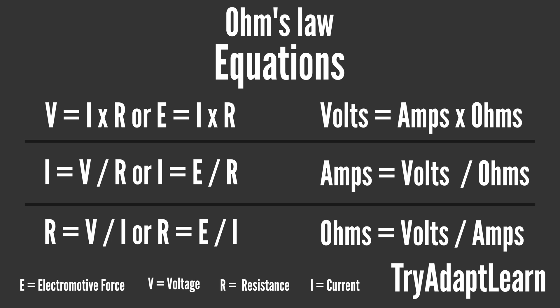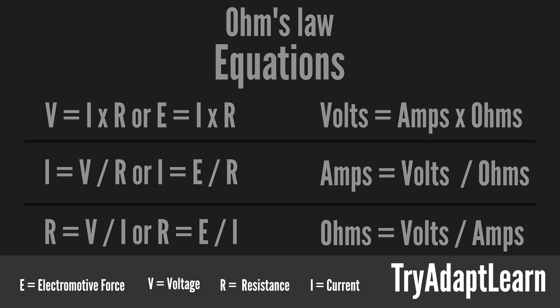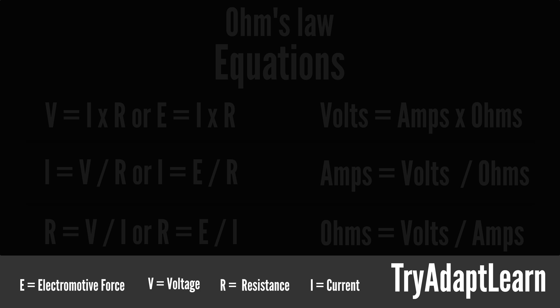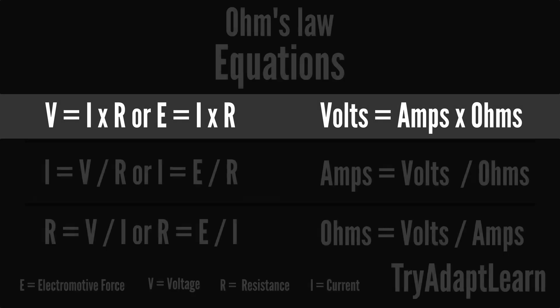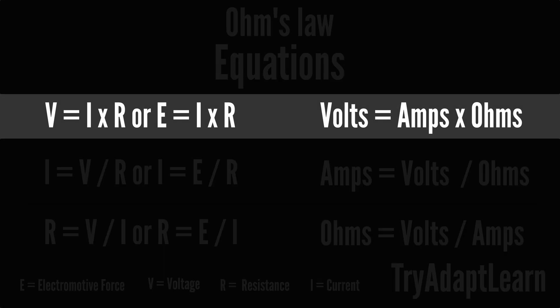There are a few things to remember with the equations associated with Ohm's Law. First, equations are usually taught with the letters EIR or VIR. As seen in this visual aid, in most circumstances the E or electromotive force and V or voltage can be interchangeable. Electromotive force or voltage is the difference in the electric potential between two points in a circuit, measured in volts.